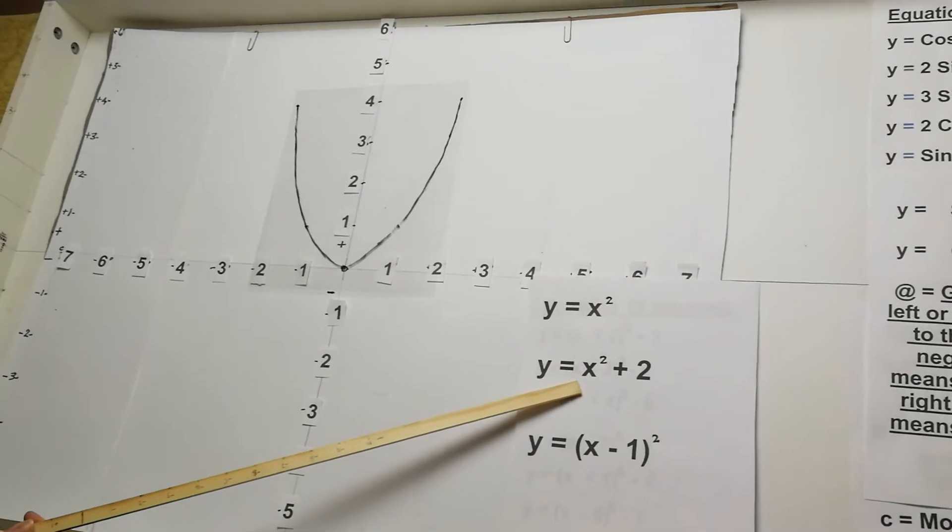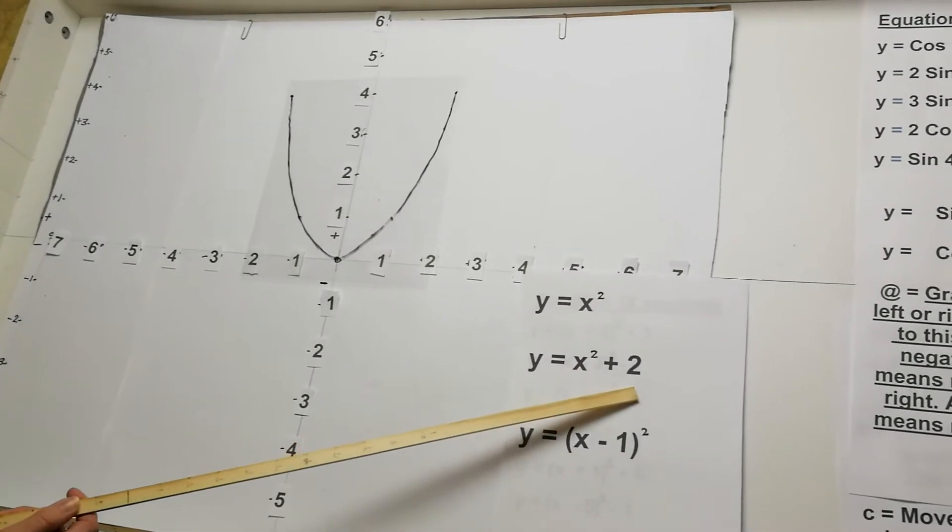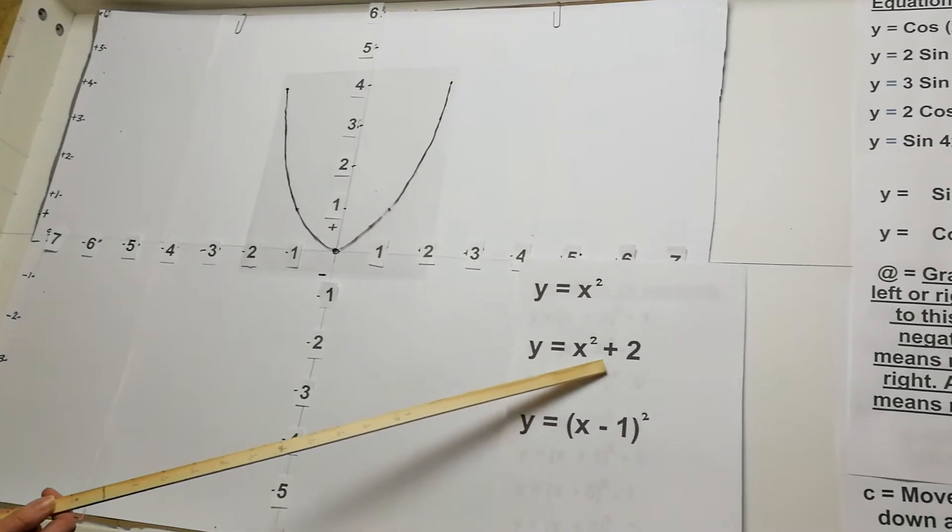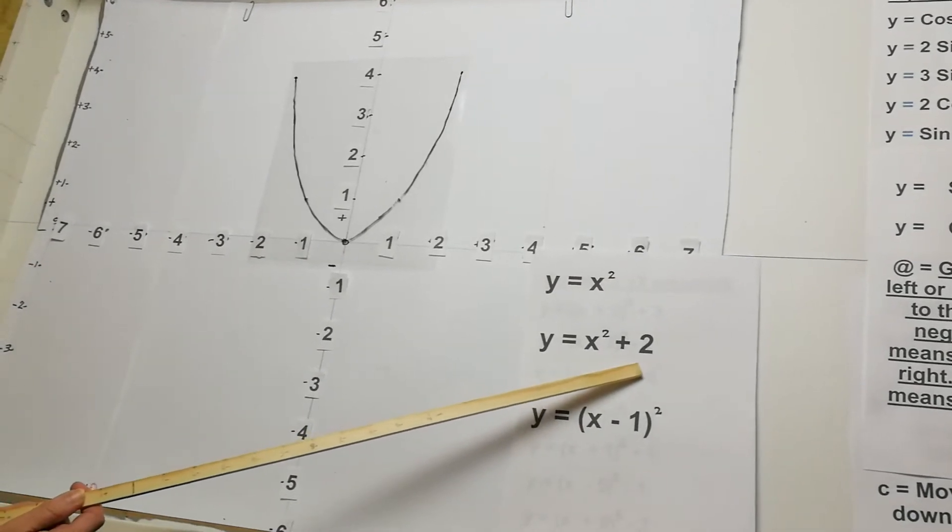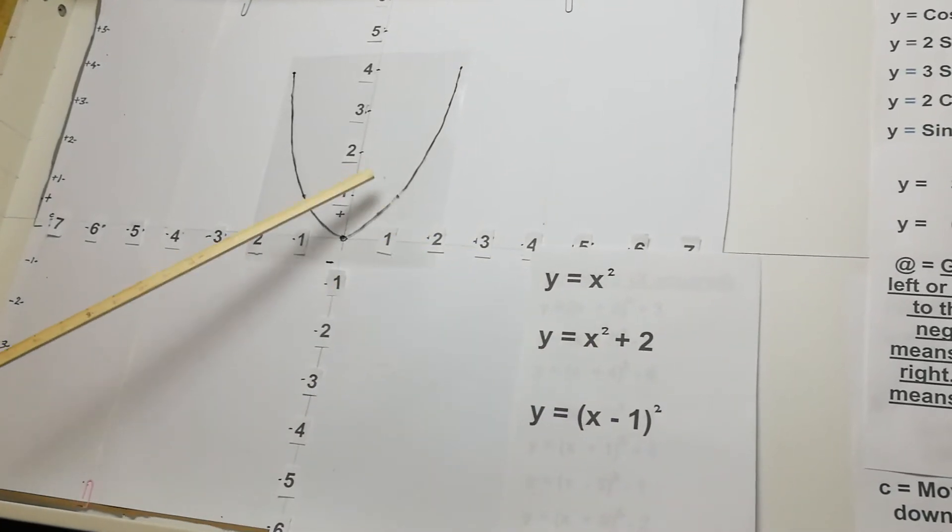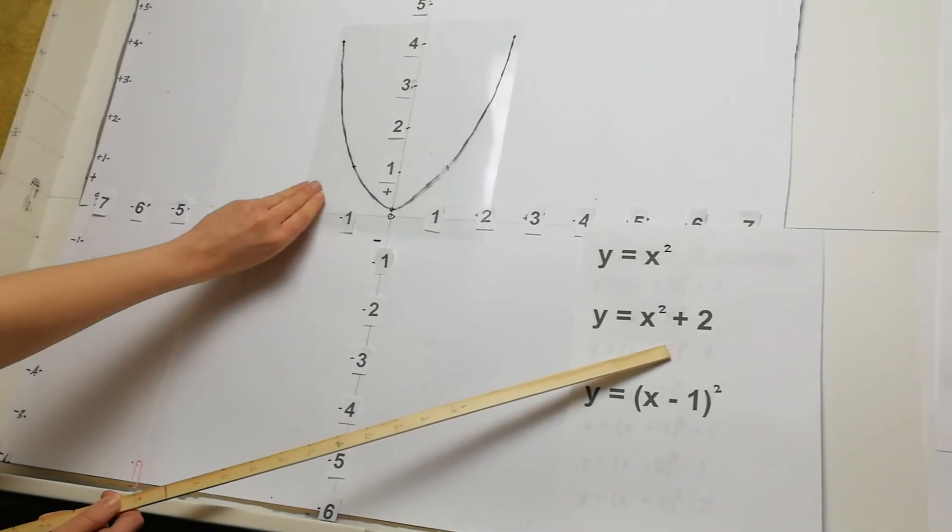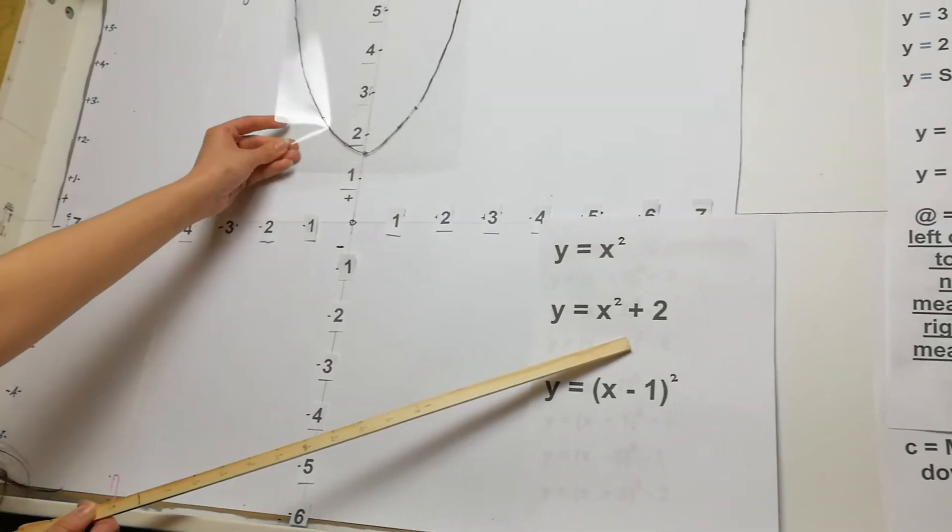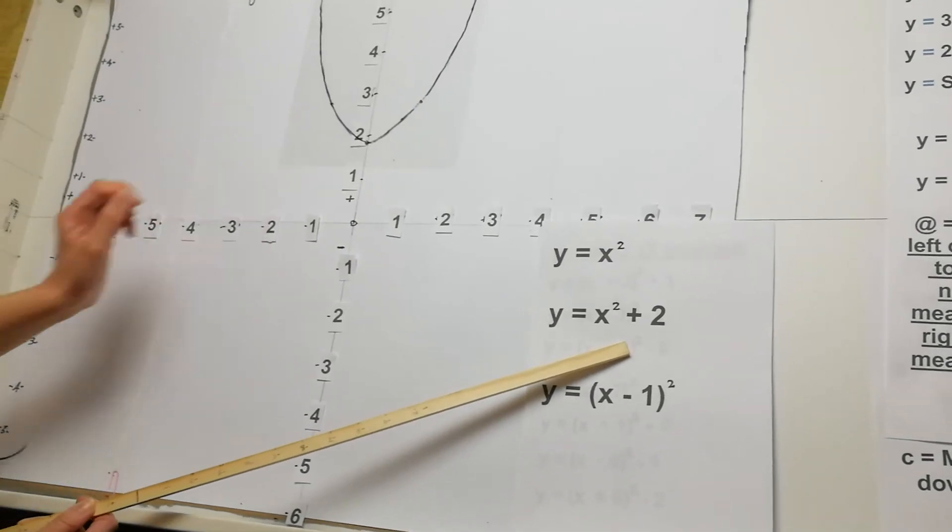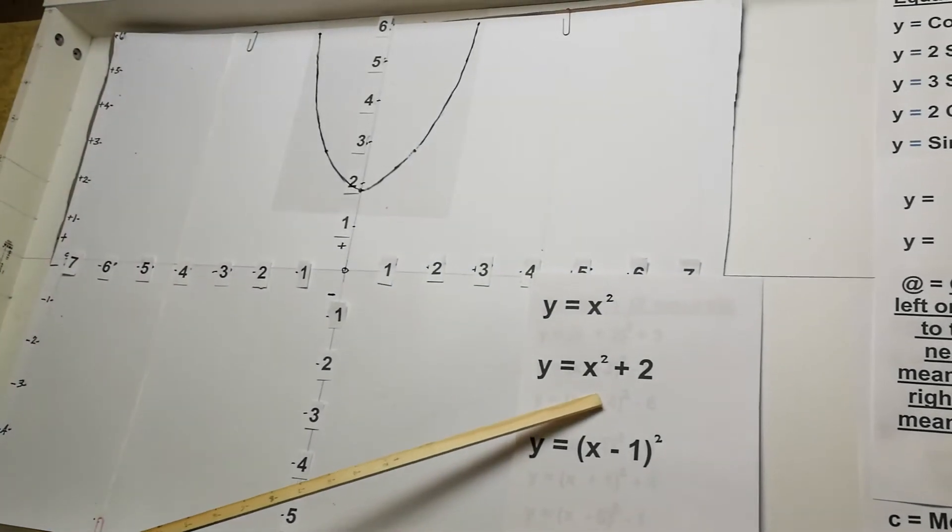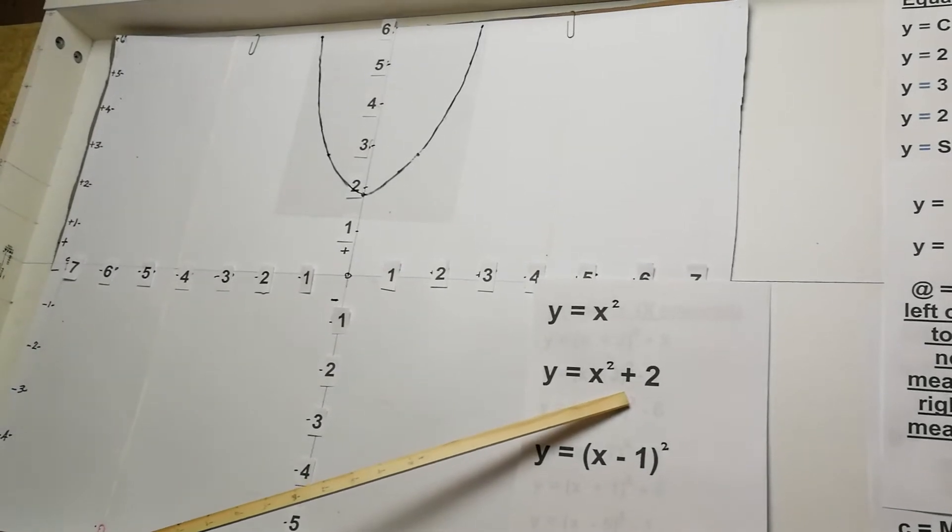I'm looking at this next one here. And we've got y equals x squared plus 2. Now, that plus 2 on the end, so if it's a plus or a minus on the end, that refers to the graph moving up or down. So because it's plus 2, it just means that the graph would move up by two places. So it would move up to the number 2.